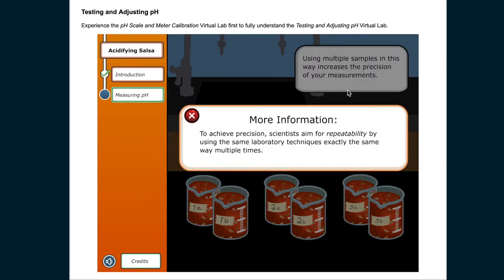To achieve precision, scientists aim for repeatability by using the same laboratory techniques, exactly the same way, multiple times.